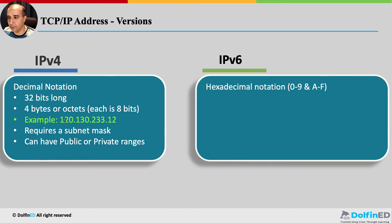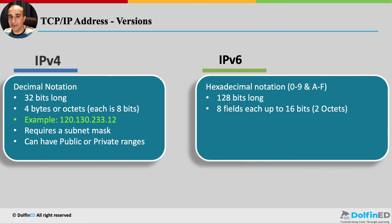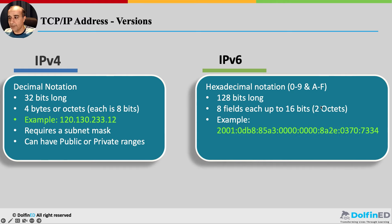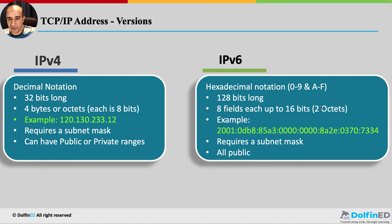When concerns arose that IPv4 would be depleted — IPv4 addresses are scarce and there aren't enough for everything on the internet — IPv6 was developed. IPv6 is in hexadecimal notation, it is 128 bits long (four times longer than IPv4), and has eight fields, each 16 bits (two octets). It's much more complex compared to IPv4, also requires a subnet mask, and is all public — there are no private IPv6 addresses.